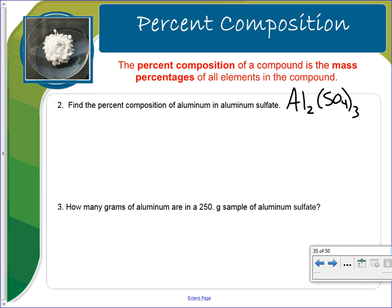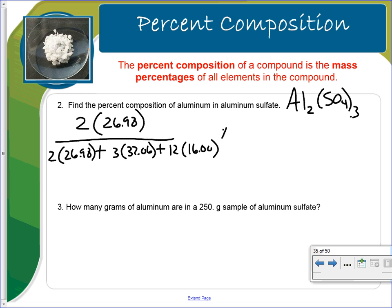So when we go to do this, I'm going to show you an alternate way to do this. How much of it is aluminum? We have two aluminums times the 26.98. Plus we have three sulfurs, which is 32.06. Plus we have 12, three times four, 12 oxygen at 16.00. We can divide that, multiply it by 100, and we'll find that the percent composition of aluminum and aluminum sulfate is 15.77 percent.